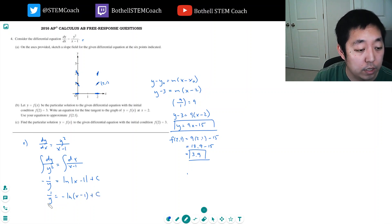And then I flip it. Y equals 1 over negative natural log x minus 1 plus c.